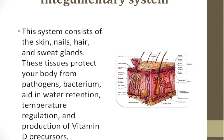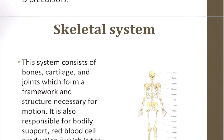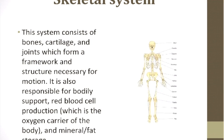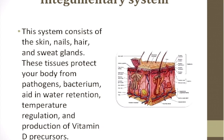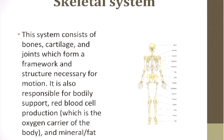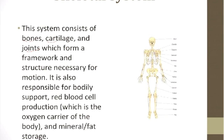The first system is the integumentary system, which consists of the skin, nails, hair, and sweat glands. These tissues protect your body from pathogens, aid in water retention, temperature regulation, and production of vitamin D precursors. The skeletal system consists of bones, cartilage, and joints, which form a framework and structure necessary for motion. It is also responsible for bodily support, red blood cell production — the oxygen carrier of the body — and mineral and fat storage.